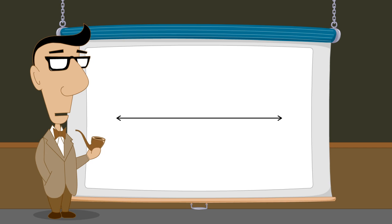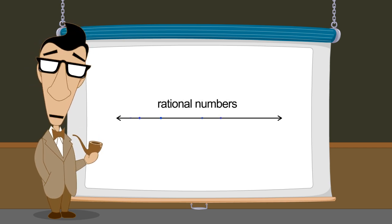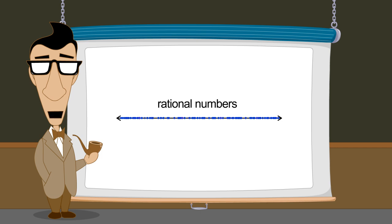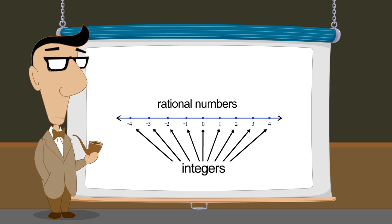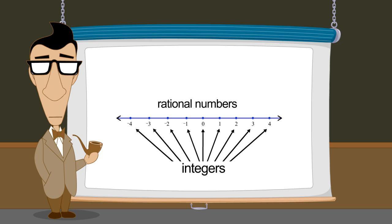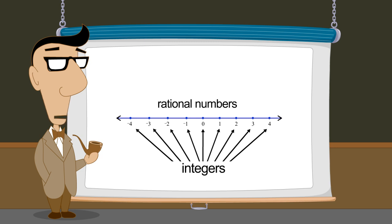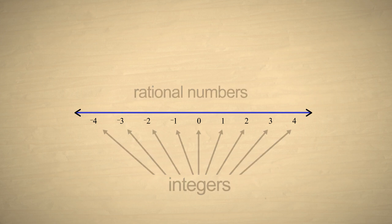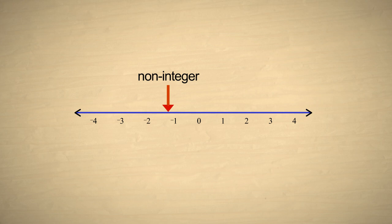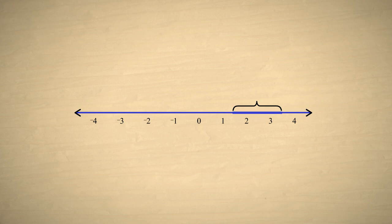We have seen that there are an infinite number of rational numbers and when represented on the number line, the points appear to fill the entire line. We have also seen that the rational numbers include all the integers. So if we pick some random location on the number line, what are the chances that this location will correspond to an integer as opposed to some other number? Remember that points have zero width. So if we pick a purely random location the chances are essentially zero that that location will correspond exactly to an integer. This is because any finite interval on the number line contains an infinite number of rational numbers but only a finite number of integers.